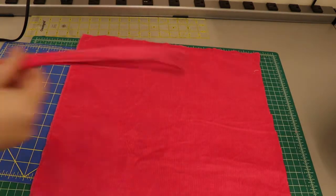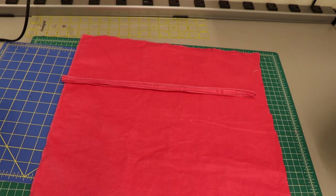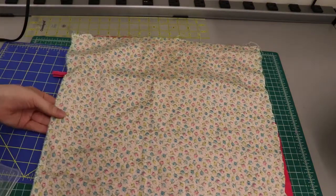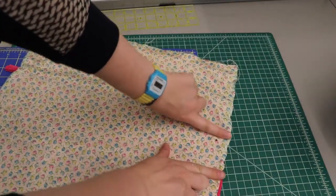Next, I laid out my pieces. I laid out my ties on the upper half where I wanted them to stick out, facing in. Then I pinned all the way around, leaving a gap. I'm going to use this gap to turn it inside out later.